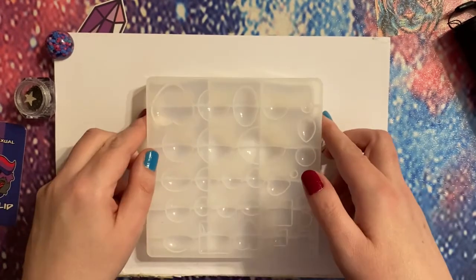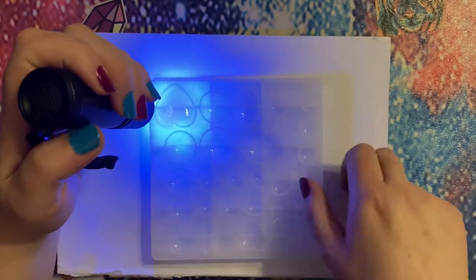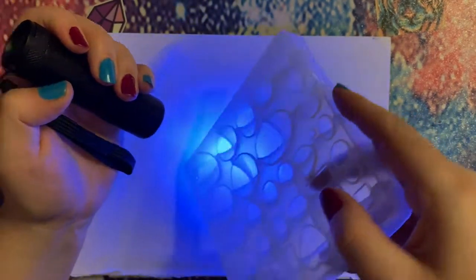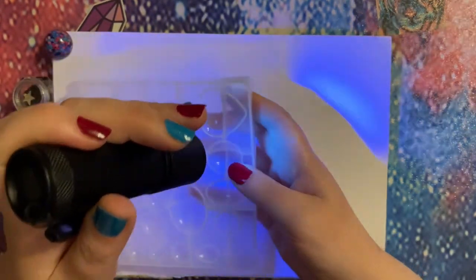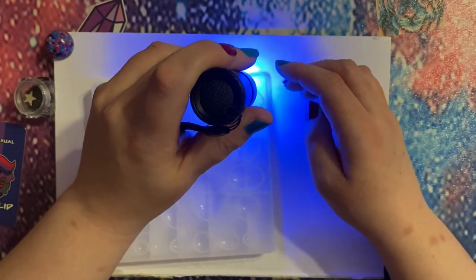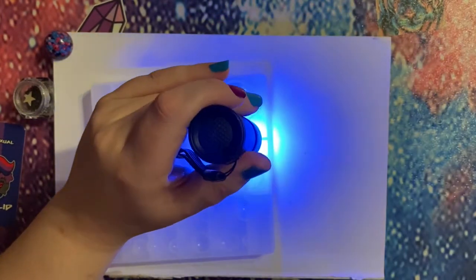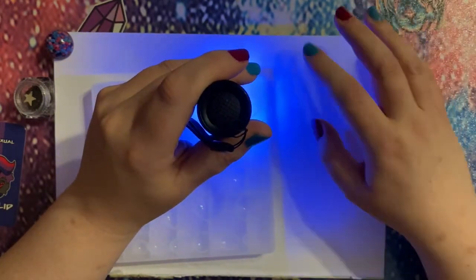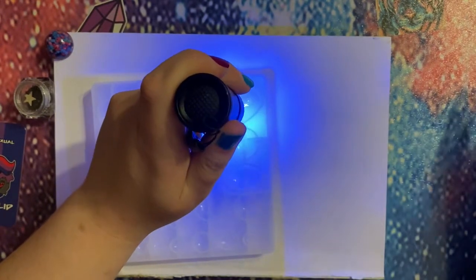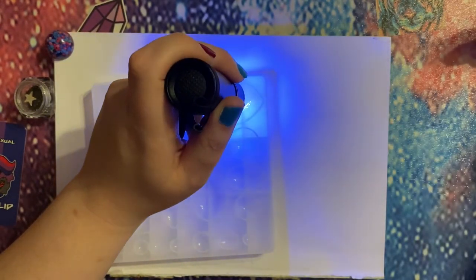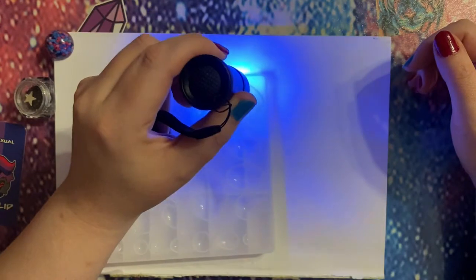Right, so that is all coated and then we come in with our UV lamp. It's a super super quick way of working. You can, if you have access to one, use the UV lamps that are for gel nails. I have one of those as well, so if you want to put something to the side and have it curing whilst you're doing something else then that's great because they have a timer on them.